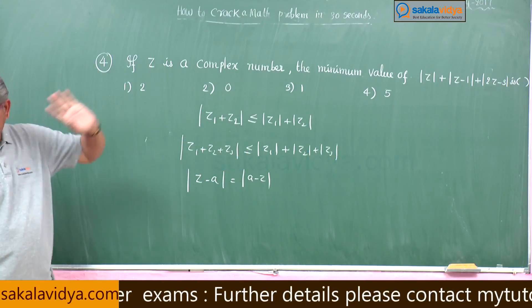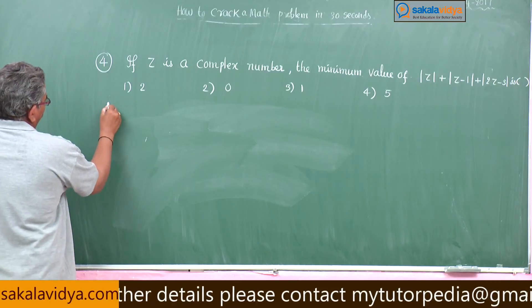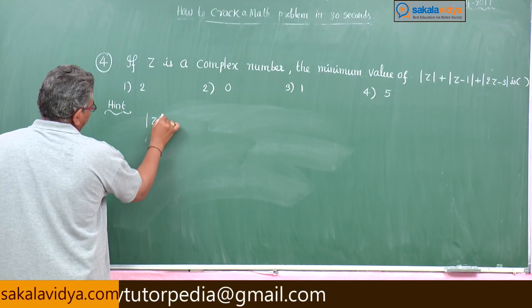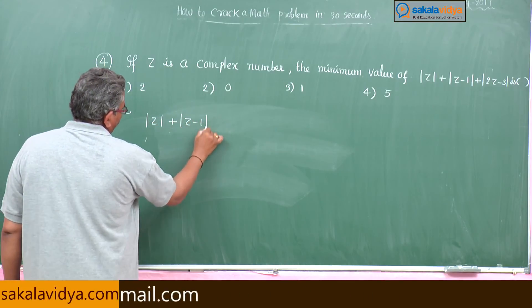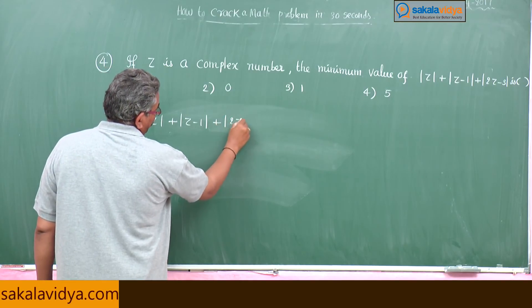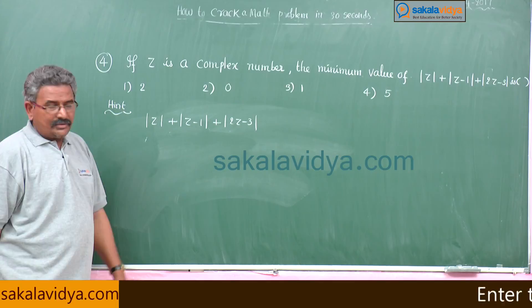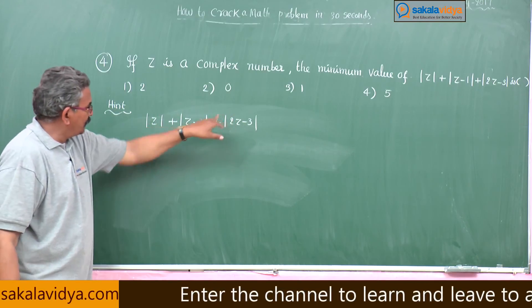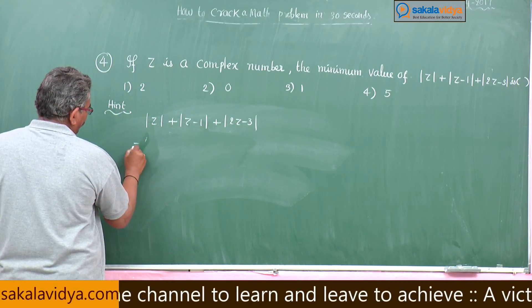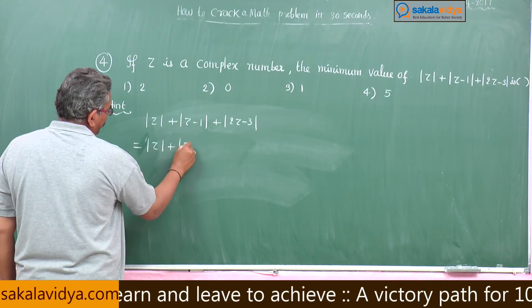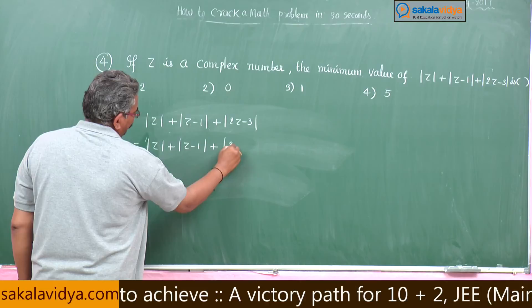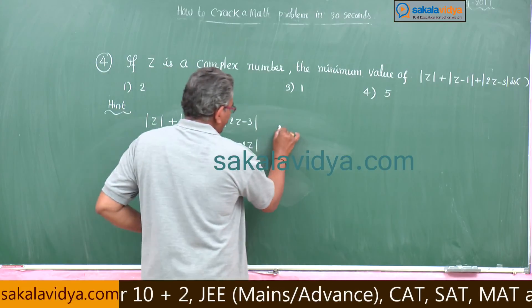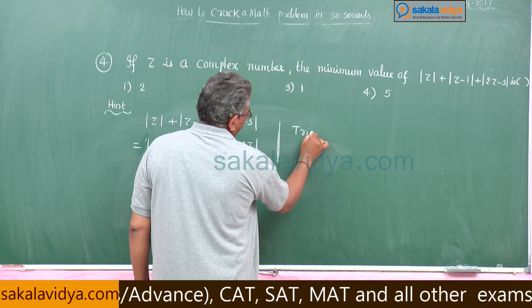And besides one more concept also we have to find out. Modulus of something z minus a is there, this you can write modulus of a minus z, both are same. So using these two concepts this problem can be solved. See hint: mod z plus mod z minus 1 plus mod 2z minus 3. See z plus z is 2z, 2z minus 2z will be getting cancelled. So we have to change this one. This is equal to mod z plus mod z minus 1 plus modulus of 3 minus 2z you can write, no problem.